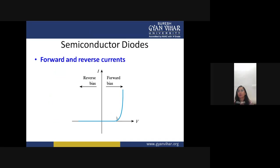In ideal conditions, in forward bias the current starts to flow and increases; in reverse bias the current does not flow in the reverse direction. That is why a diode is called unidirectional.